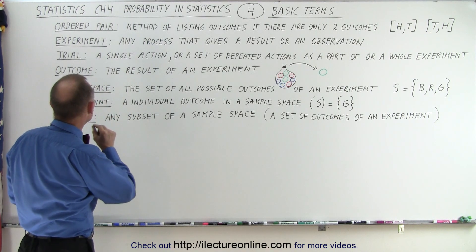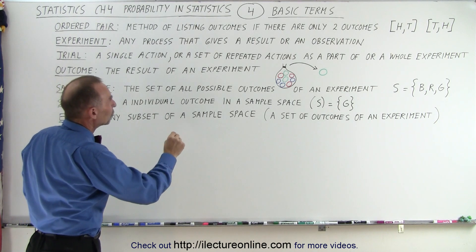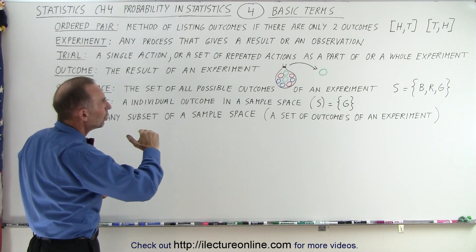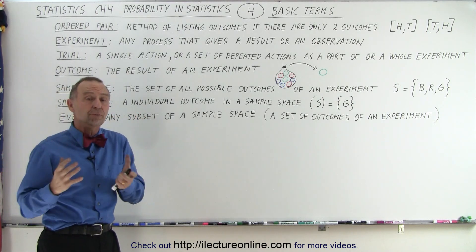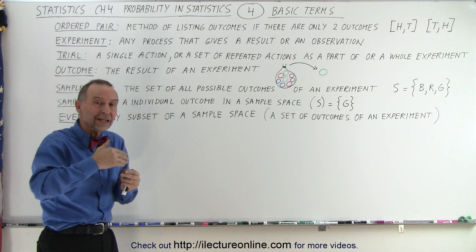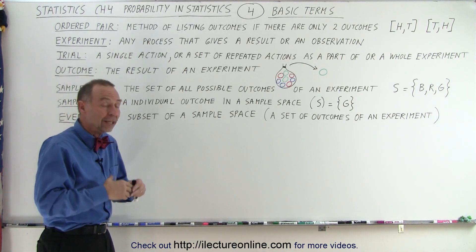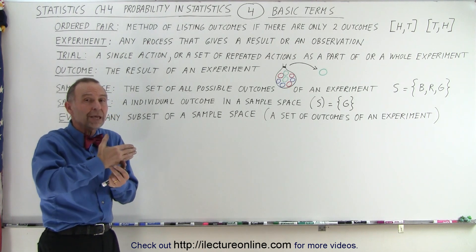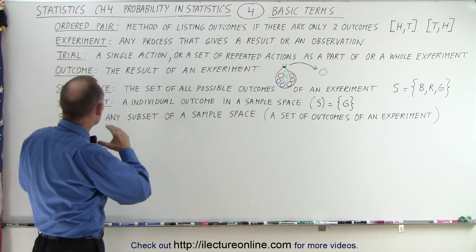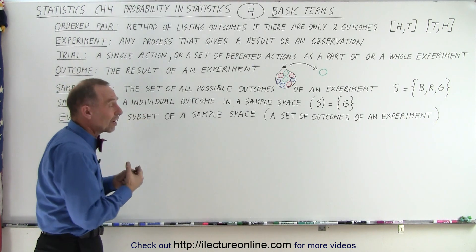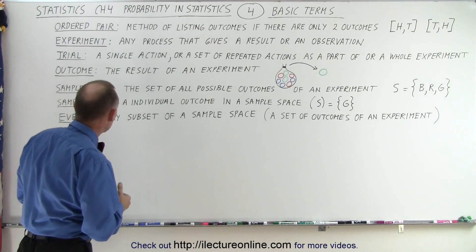Third, we have the word trial. A trial is a single action or a set of repeated actions as part of or as a whole experiment. So a single trial could be the entire experiment, or it could be that it's repeated trials to make up an experiment. And the trial itself could be a single action, or it could be a multiple repeated set of actions. So you can see that a trial could be the experiment, or a trial could be a portion of an experiment, depending upon what is happening in the experiment.